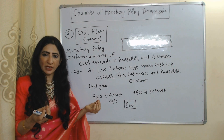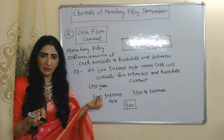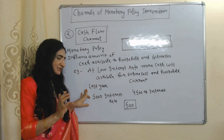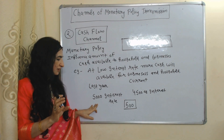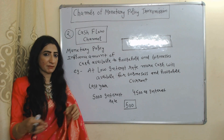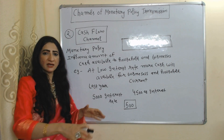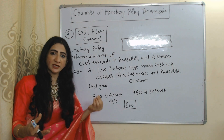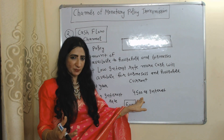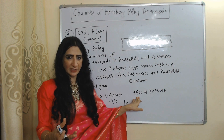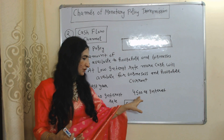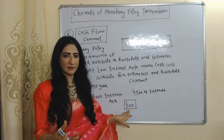The second channel is the cash flow channel — monetary policy influences the amount of cash available to households and businesses. For example, last year you were paying 5,000 as interest to banks, but this year the central bank through monetary policy reduced the interest rate — that's why in this year you are paying just 4,500 as interest. The difference between 5,000 and 4,500 is equal to 500.